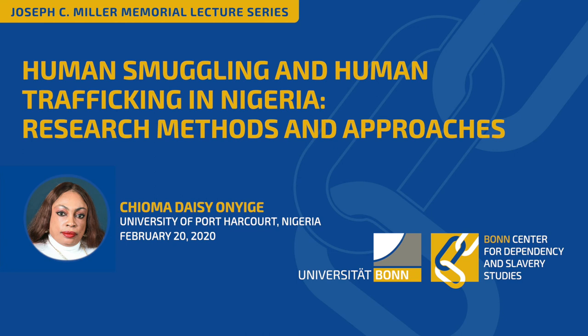Human trafficking, as defined by Article 3 of the Protocol to Prevent, Suppress, and Punish Trafficking in Persons 2000, is the recruitment, transportation, transfer, harboring, or receipt of persons by means of threats or use of force or other forms of coercion, of abduction, of fraud, of deception, of the abuse of power or of a position of vulnerability, or of the giving and receiving of payments or benefits to achieve the consent of a person having control over another person for the purpose of exploitation. Exploitation includes, but is not limited to, forced labor, prostitution, sales of organs, servitude, and sexual exploitation.